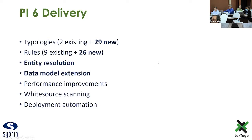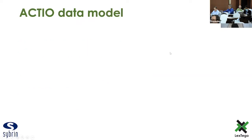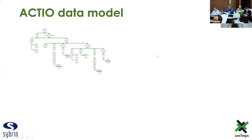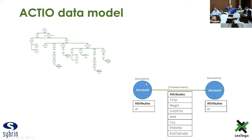We also completed an entity resolution process to disambiguate entities across the ecosystem, and extended our data model with those additional entities so that we could run additional rules to evaluate the behavior of the account-holding entities and not just the accounts where transactions originate and terminate. The Actio data model was originally based purely on an ISO 20022 implementation — for example, the Pain001 transaction and its breakdown in tree structure. The MojaLoop data was mapped to these messages, and then mapped inside our environment into a graph database where we map accounts to other accounts through the transactions that connect them.